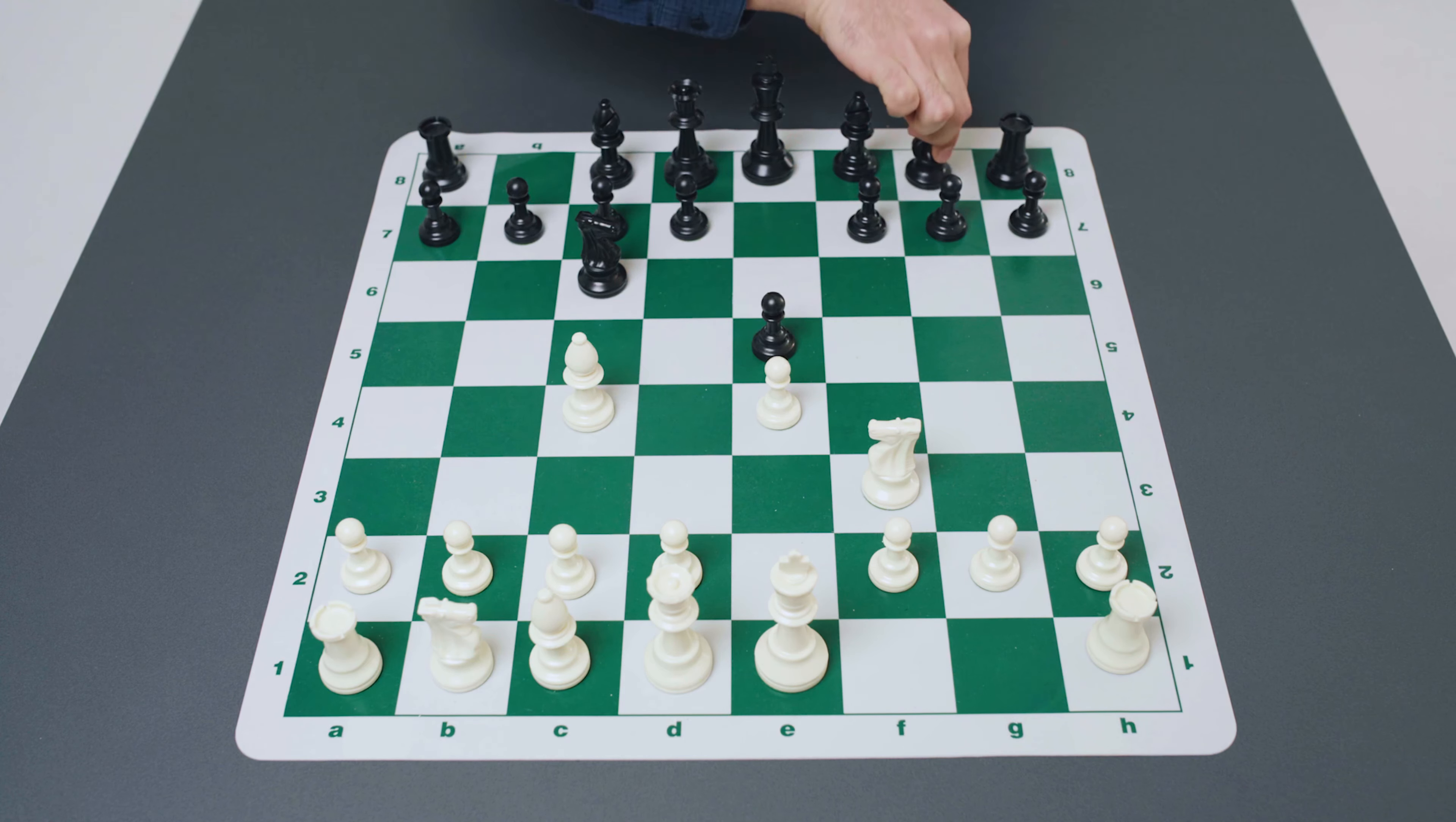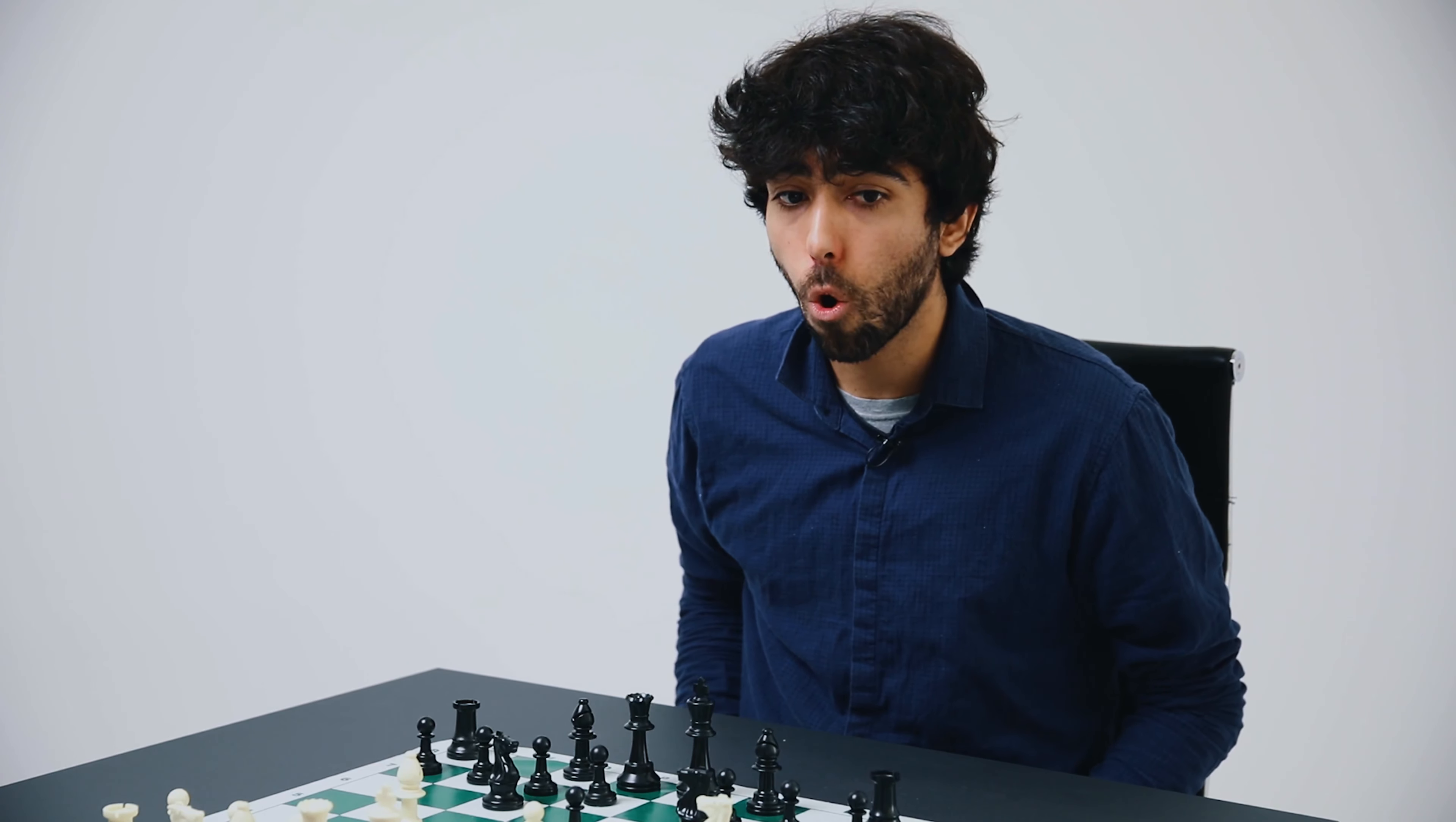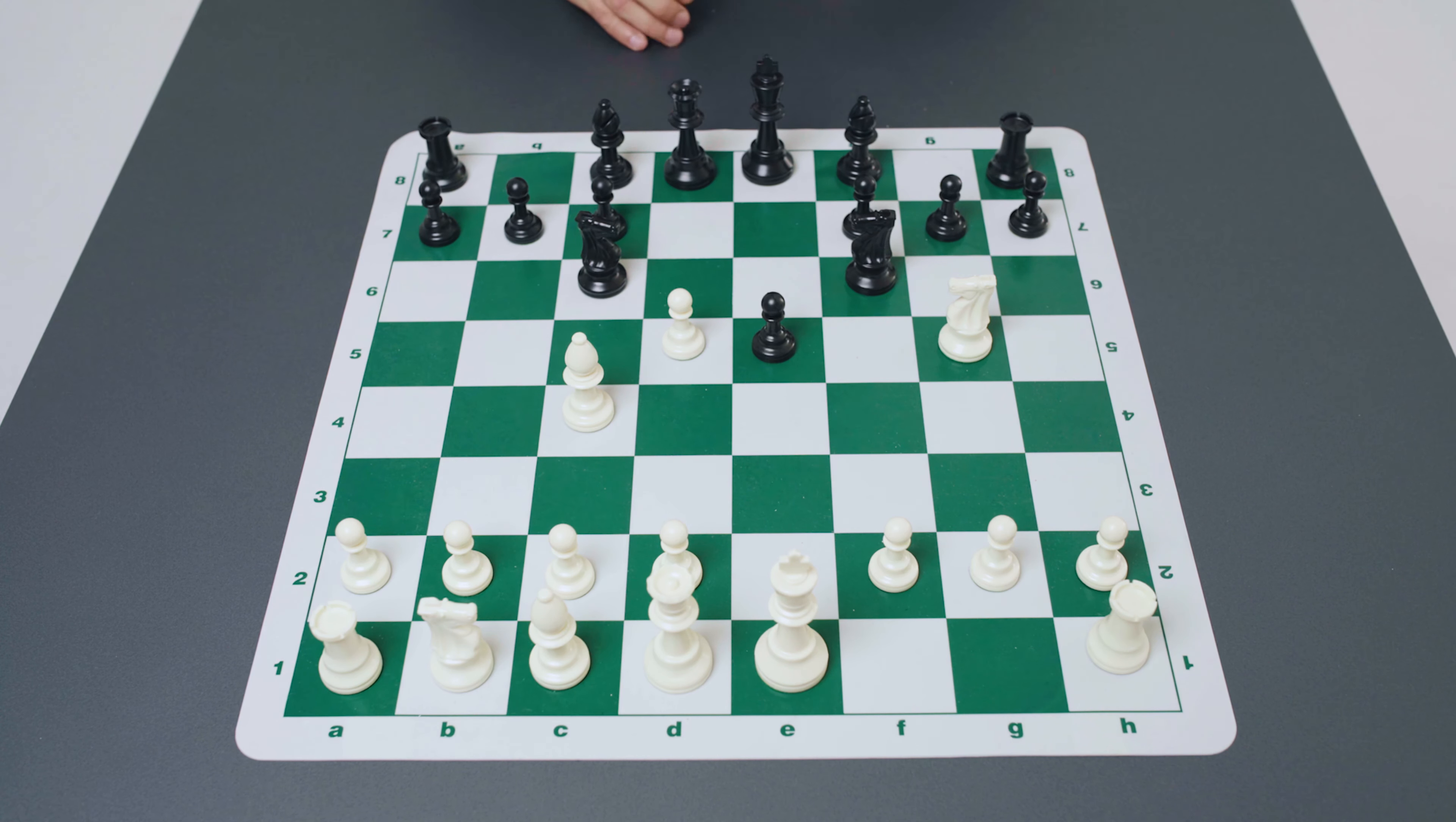Finally in this position if instead of kingside castling white decides to continue his queenside development, this is a little bit less popular. The move knight to c3 will lead to what is known typically after black's response knight f6, what is known as the four knights variation of the Italian game.